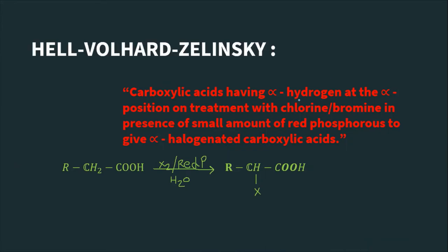Carboxylic acids having alpha hydrogen. What is meant by alpha hydrogen? Hydrogen which is attached to the carbon next to the functional group is known as alpha hydrogen. If we see here, COOH is a functional group, so the next carbon is called alpha carbon. Hydrogens attached to that alpha carbon are called alpha hydrogens. So here we have two alpha hydrogens.